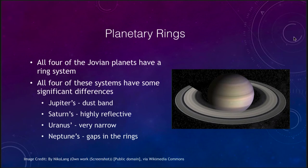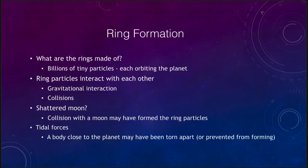Let's look at ring formation — where do rings come from in the first place? What are the rings made up of? They are billions of tiny particles, each orbiting the planet — you can think of them each as a small moon. Each of these is very small: they may only be a few centimeters in size, or up to a meter or so, but they're not gigantic objects.